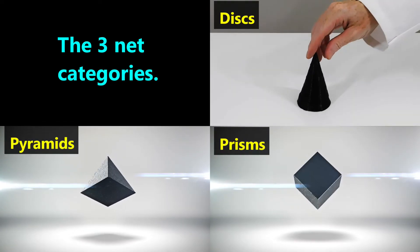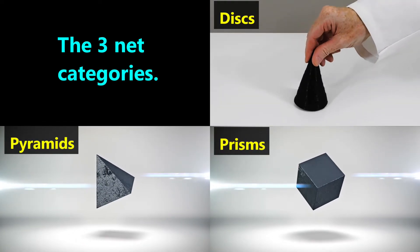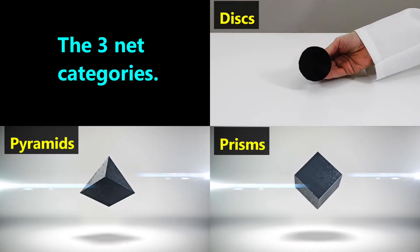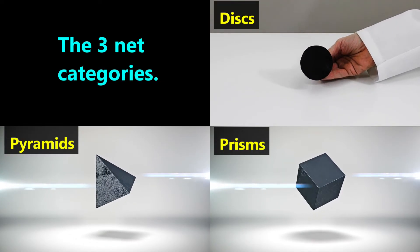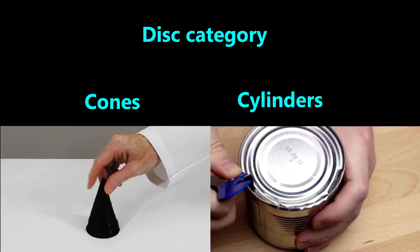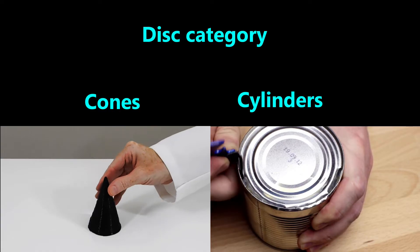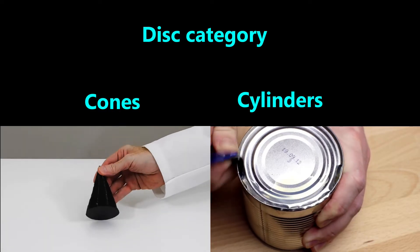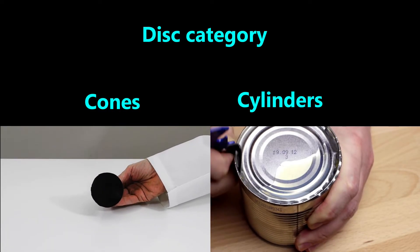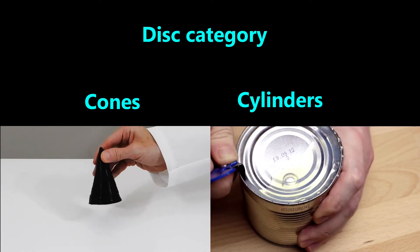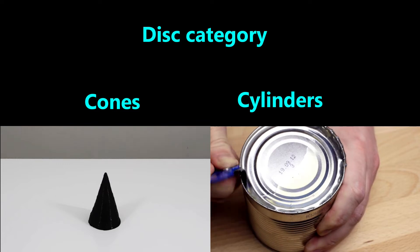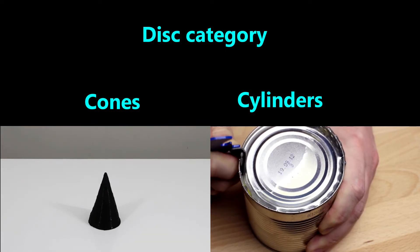There are three categories for 3D shapes that nets can make: disks, pyramids, and prisms. The disk category is made of two shapes — cones and cylinders. Both of these 3D shapes have a disk. A disk is like a circle that has its center filled in. A cone has one disk whereas a cylinder has two disks. Having a disk is a unique feature of 3D shapes in the disk category compared with other 3D shapes.